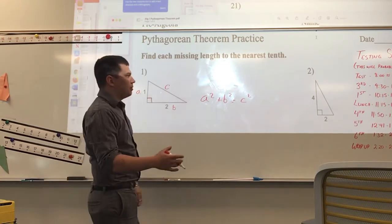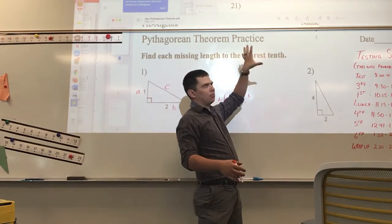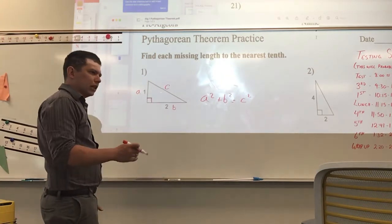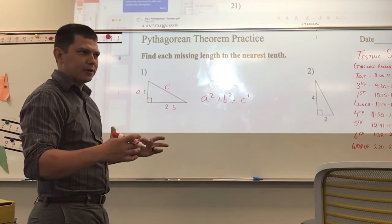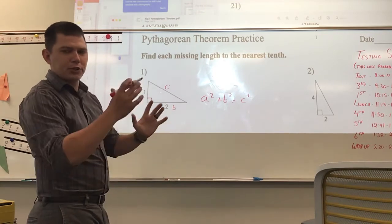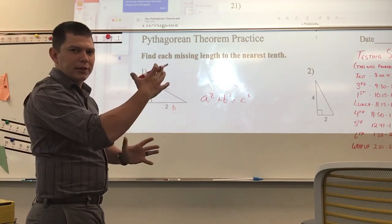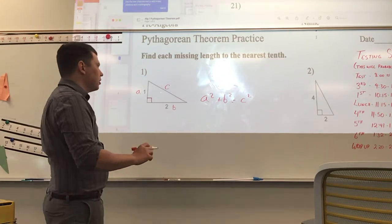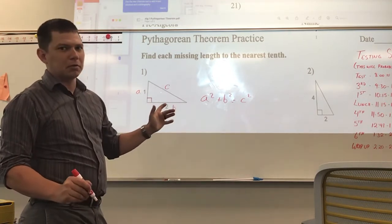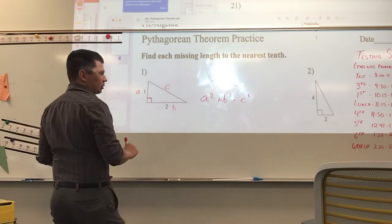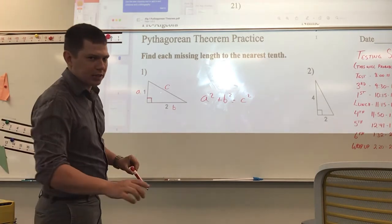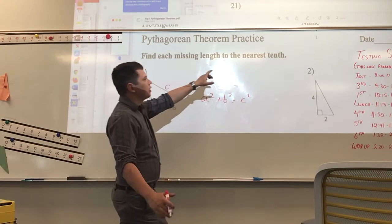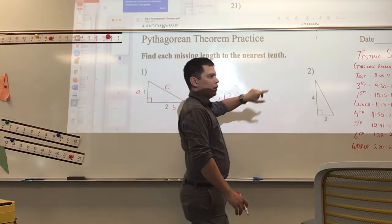Now these are going to be decimals — almost all of them. There are a few that are perfect triangles, like if the two legs are three and four, then the hypotenuse will be five. But probably most of these are going to wind up being decimals, so don't be freaked out. It might even be a really long decimal, but we're going to round to the nearest tenth — one decimal place.